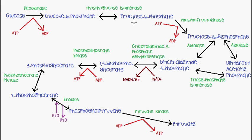Fructose-6-phosphate is then converted into fructose-1,6-bisphosphate, meaning another phosphate group has been added. That phosphate group comes from ATP — so another ATP is used, ADP is produced, and we now have fructose-1,6-bisphosphate. This reaction is catalyzed by phosphofructokinase. So far, two ATP molecules have been consumed.